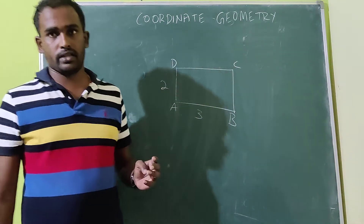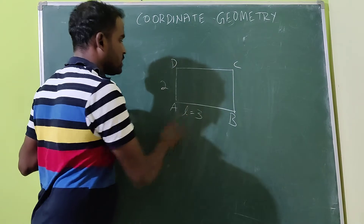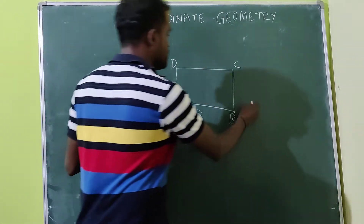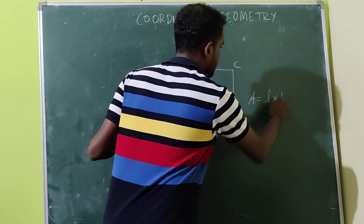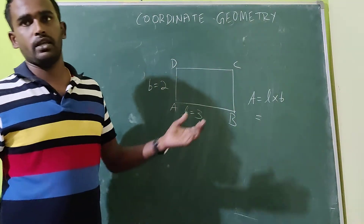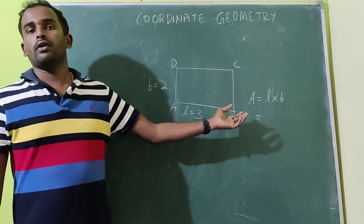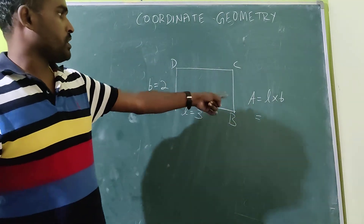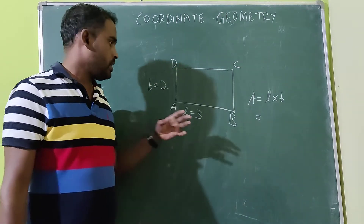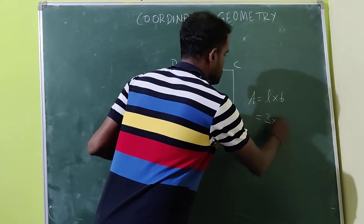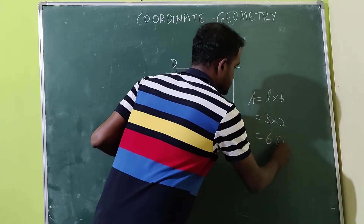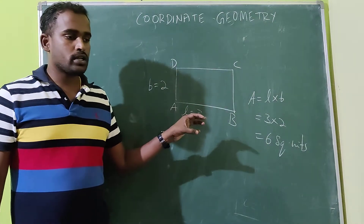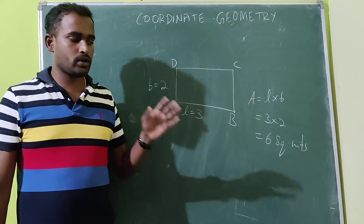For example, they may ask: find the area of a rectangle whose length is three units and breadth is two units. The area of a rectangle equals length into breadth — L into B. This formula was in the seventh standard textbook. So area A equals L into B equals three into two, which gives us six square units. This is geometry — here we can find the area.